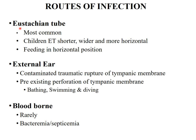Routes of infection: the Eustachian tube is the most common route. The infection travels via its lumen or along the subepithelial peritubal lymphatics. The Eustachian tube in infants and small children is shorter, wider and more horizontal, which may account for the higher incidence of infections in this age group. Breast or bottle feeding a young infant in a horizontal position may force fluids through the tube into the middle ear.